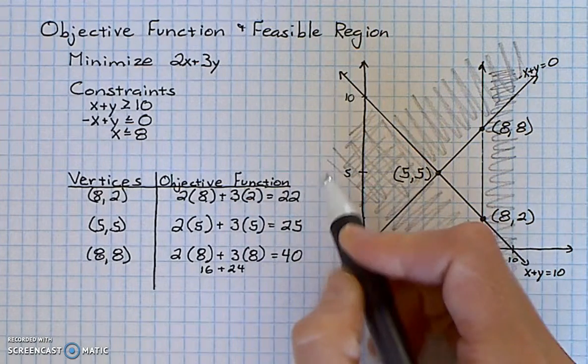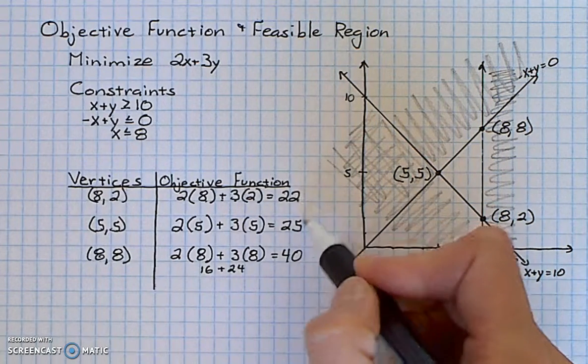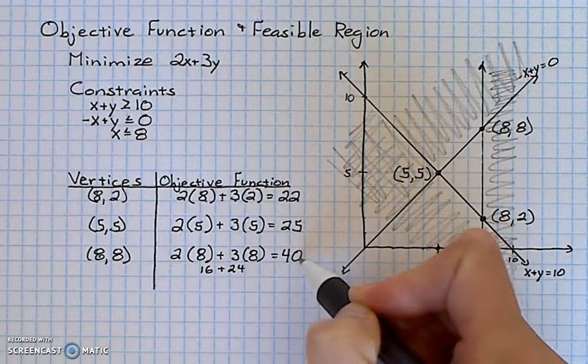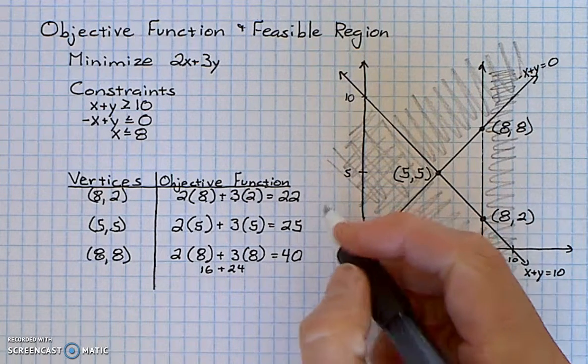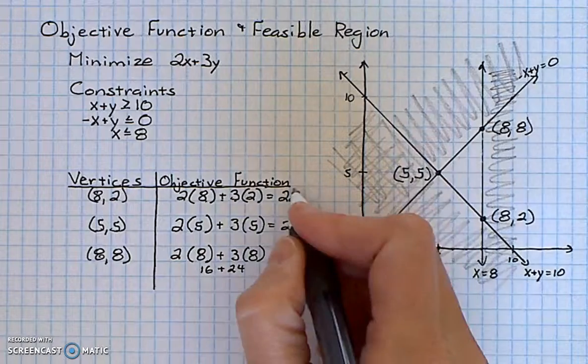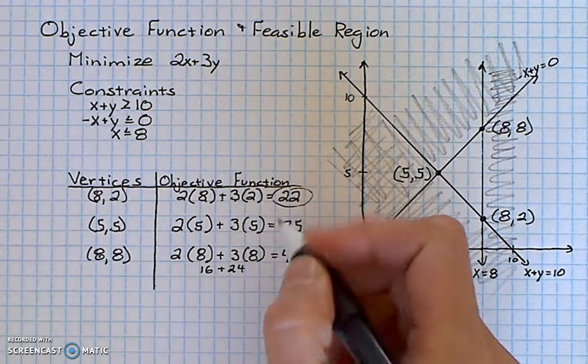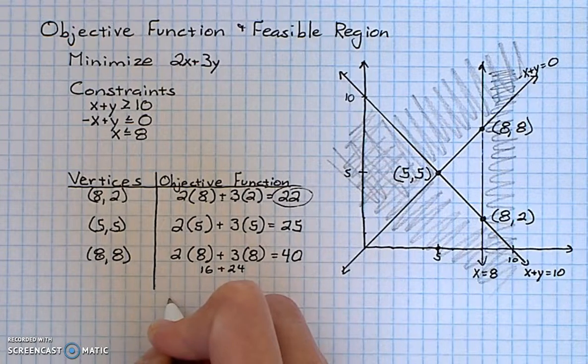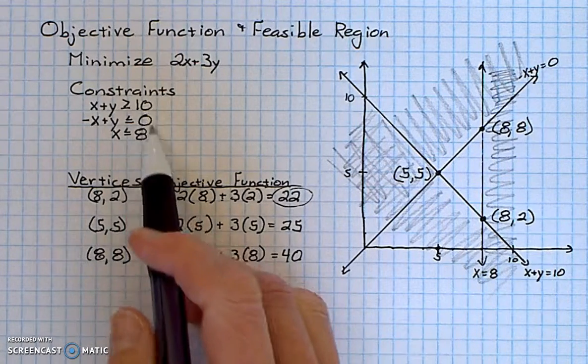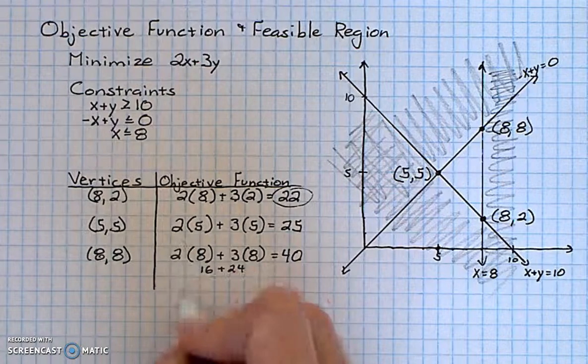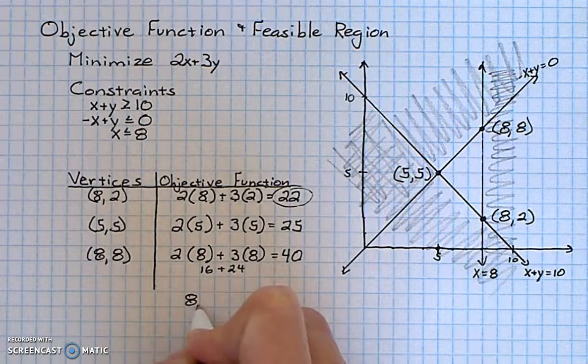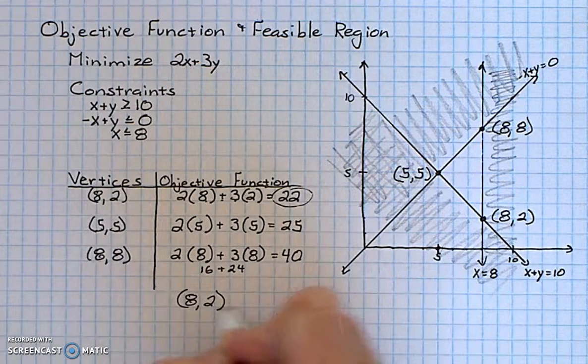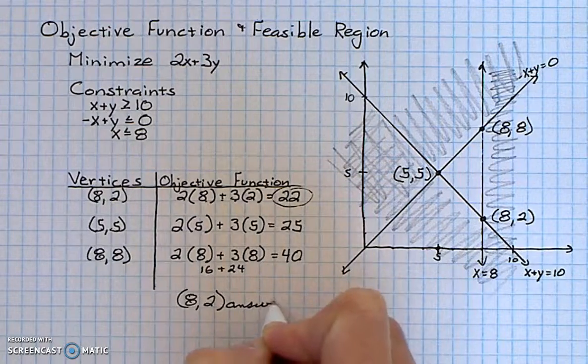I now analyze the results: 22, 25, and 40, and ask myself which one is minimized or smaller. That's the 22. So the objective function is minimized with the constraints listed at the vertex of 8, 2. 8, 2 is our answer. Thank you.